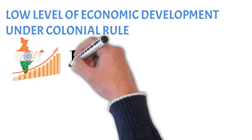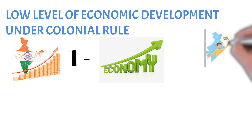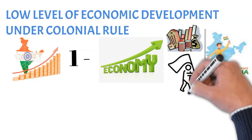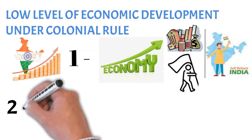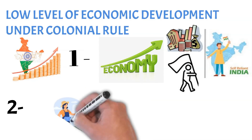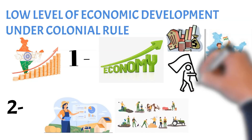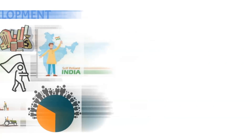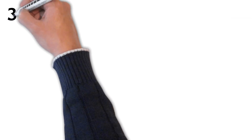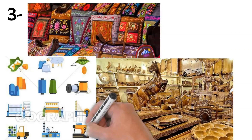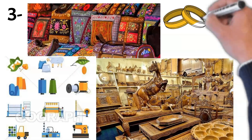Before British rule: 1. India was an independent, self-reliant and prosperous economy. 2. Agriculture was the main source of livelihood for most people, engaging about two-thirds of the total population. 3. India was also well-known for its handicraft industries in the fields of cotton, silk textiles, metal and precious stone works.